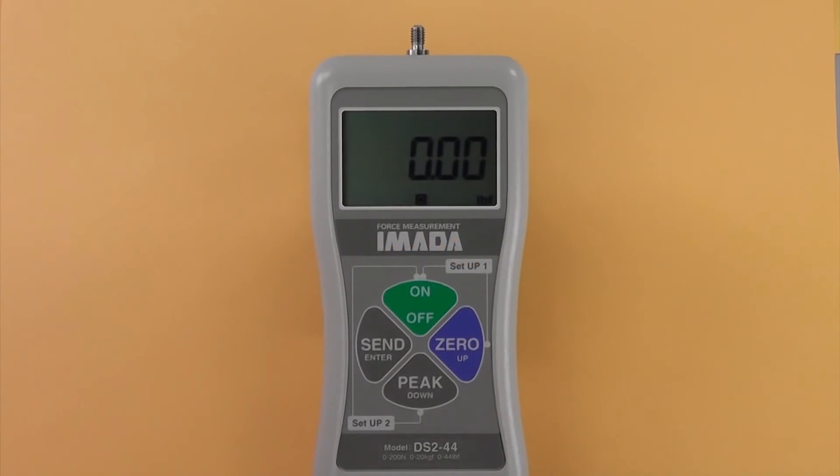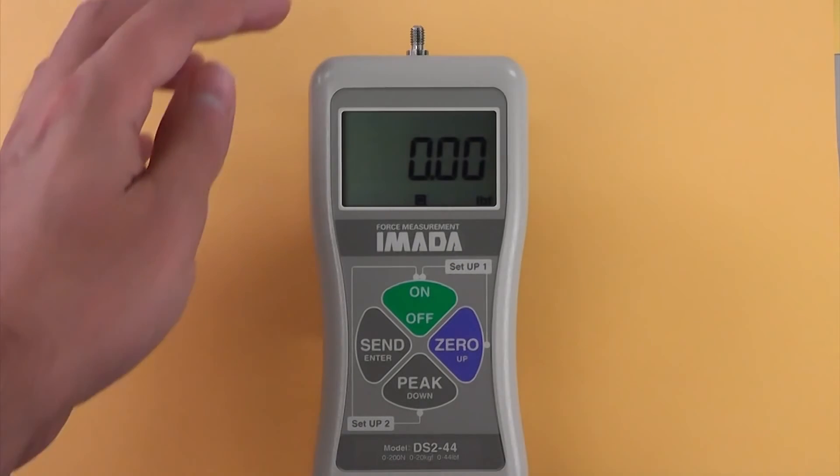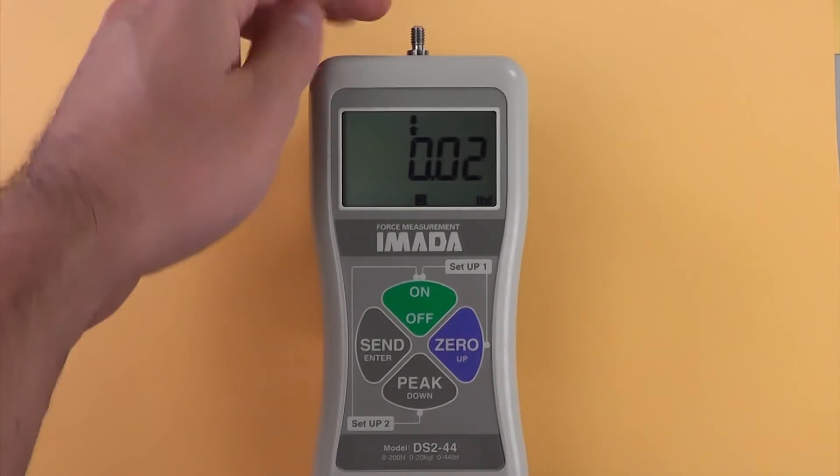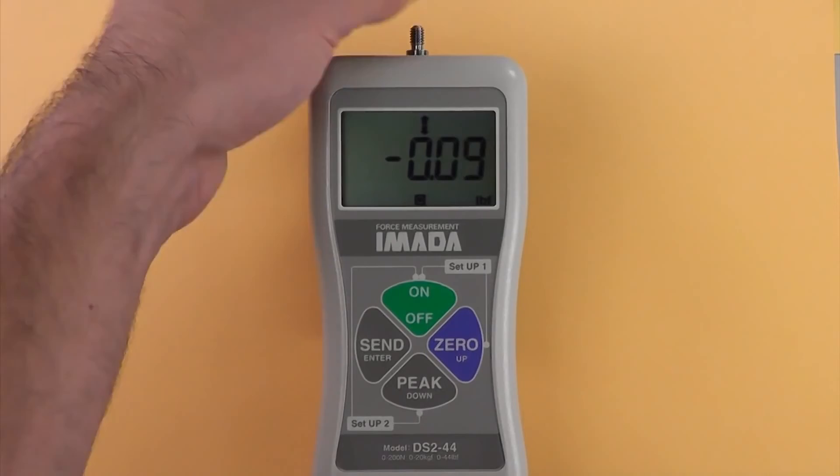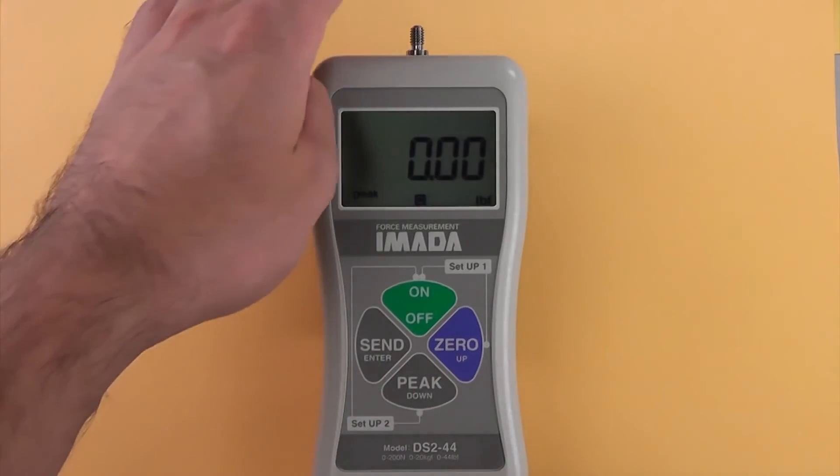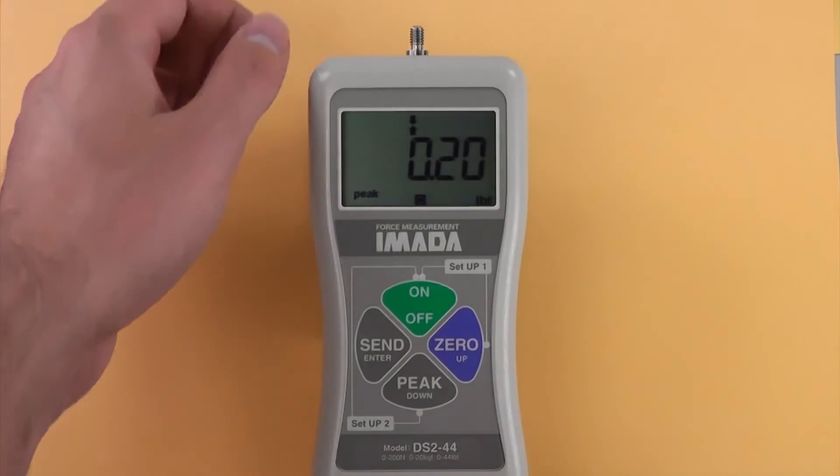Selecting PEAK or real-time measuring mode. Press ON to turn on the gauge and enter real-time mode. For peak measurement, press PEAK. Notice that PEAK appears on the display.